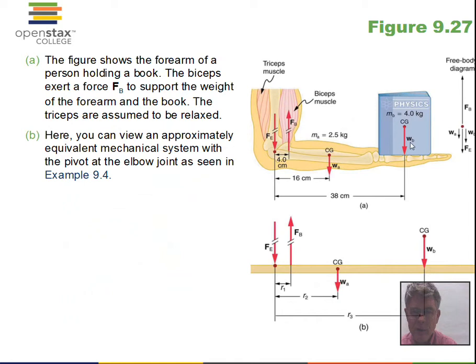Maybe the bicep muscle is the unknown quantity, unknown force. But with the torque equation, we'd be able to solve that. A beam just kind of illustrates the forearm.